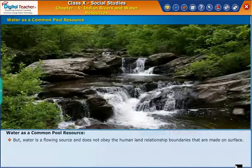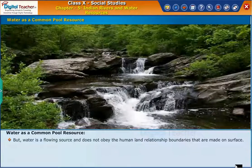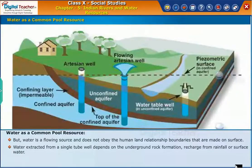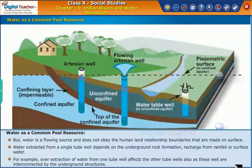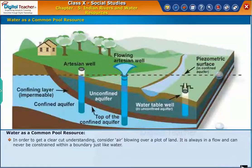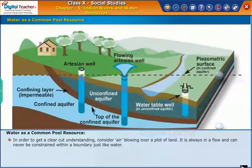But water is a flowing source and does not obey the human land relationship boundaries that are made on the surface. Water extracted from a single tube well depends on the underground rock formation and recharge from rainfall or surface water. For example, over-extraction of water from one tube well affects other tube wells as well, since these wells are interconnected by underground structures. Consider air blowing over a plot of land — it is always in flow and can never be constrained within a boundary, just like water.